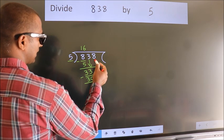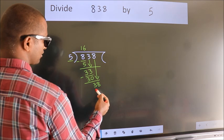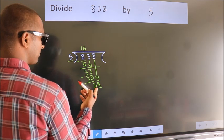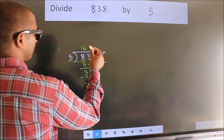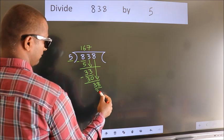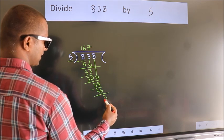After this, bring down the beside number. So, 8 down. So, 38. A number close to 38 in the 5 table is 5×7=35. Now we subtract. We get 3.